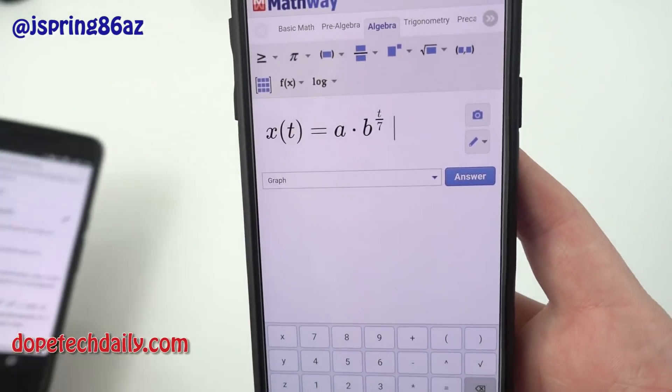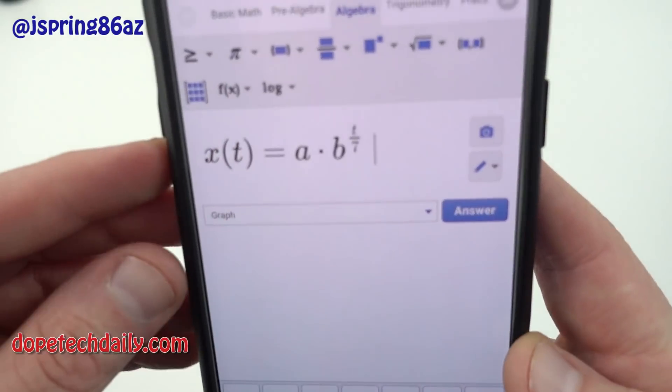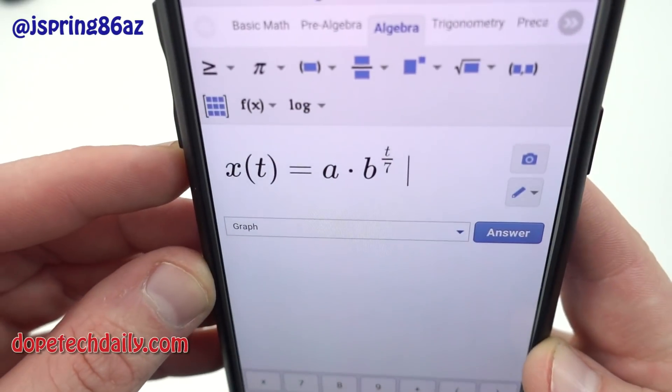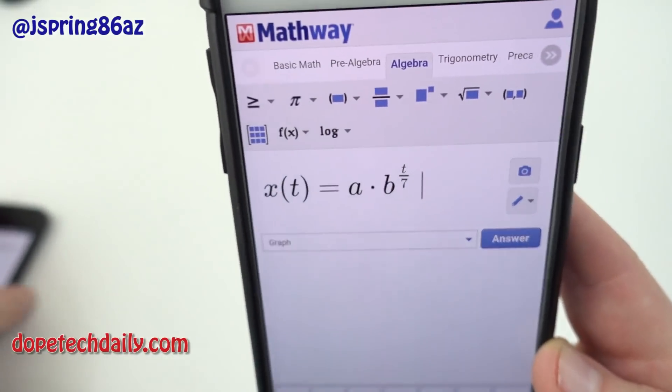Yeah and you can see here it made a small typo. It didn't put an R there. It put a 7 instead of R. So that's kind of an unfortunate typo.